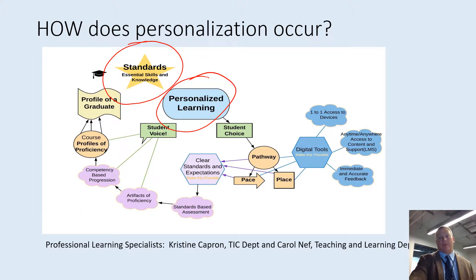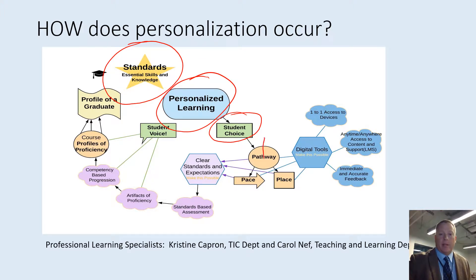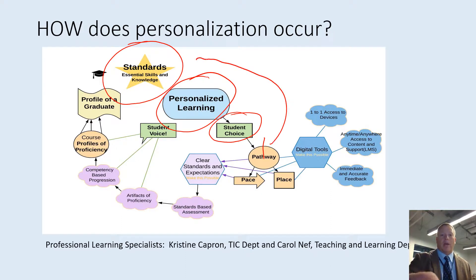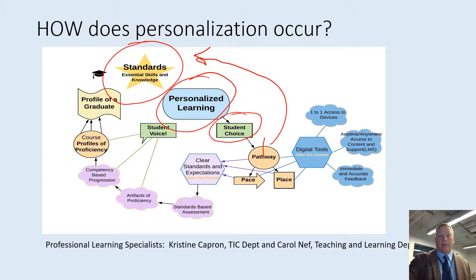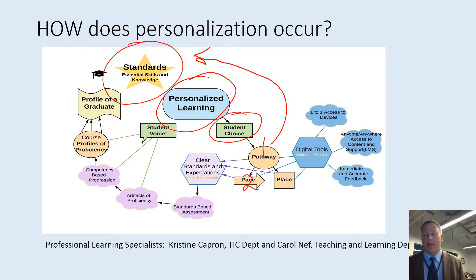If we really do personalize the student's experience — with the student at the center — that's going to manifest itself through the choices that they have. The first choice they'll experience is what pathway they will choose to follow that will help them acquire those standards. Once they've chosen a pathway, they will also have options: how quickly they move along that pathway, and where they choose to engage from.